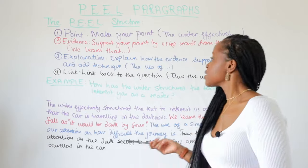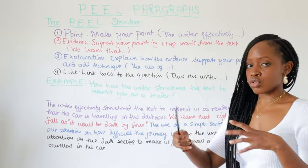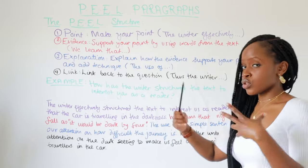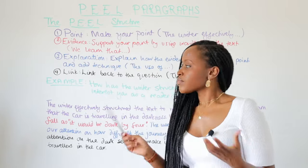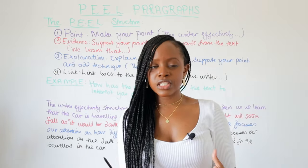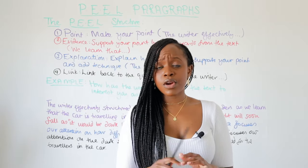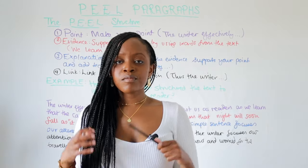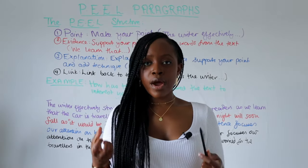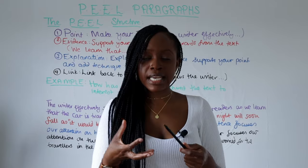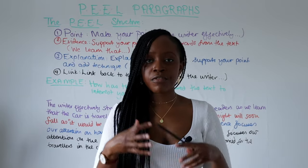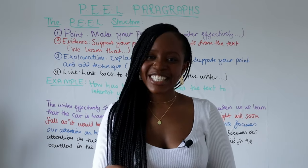So essentially, when writing any really strong paragraph, opt for either Point, Evidence, Explanation or the PEEL method — Point, Evidence, Explanation, Link. Open your Point with 'The writer effectively does whatever the question states,' your Evidence with 'We learned that...,' your Explanation with 'The use of...' and explain it, and your Link with 'Thus, the writer' going back to the question keywords. That's really it when it comes to PEEL paragraphs — a really good and effective structure for writing a solid, powerful essay. Thank you so much for listening.